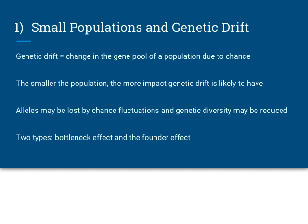Let's start with genetic drift. Genetic drift is the change in the gene pool of a population due to chance. Natural selection is when a population changes because some individuals are more fit and better adapted to survive. Genetic drift is when certain individuals survive and pass their traits on because they're lucky — it's totally random. The smaller a population is, the more impact genetic drift will have on it. Alleles or traits can be lost just by chance, which can reduce genetic diversity.